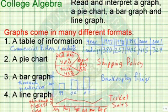One is a table of information. Here, for example, we have commercial fishery landings. The year, which would be represented by the x-coordinate, 1997 up through 2001.